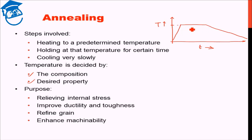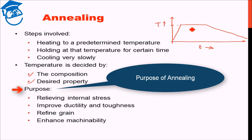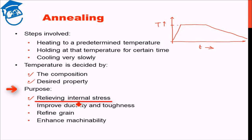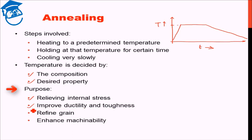What is the purpose of annealing? As we saw in stress relieving, we basically want to get rid of internal stresses. Annealing also offers relieving of internal stresses. But in addition to that, it improves the ductility and toughness of the body. It can also help in grain refinement — refining of grains. So basically these are things which can be attained by annealing.